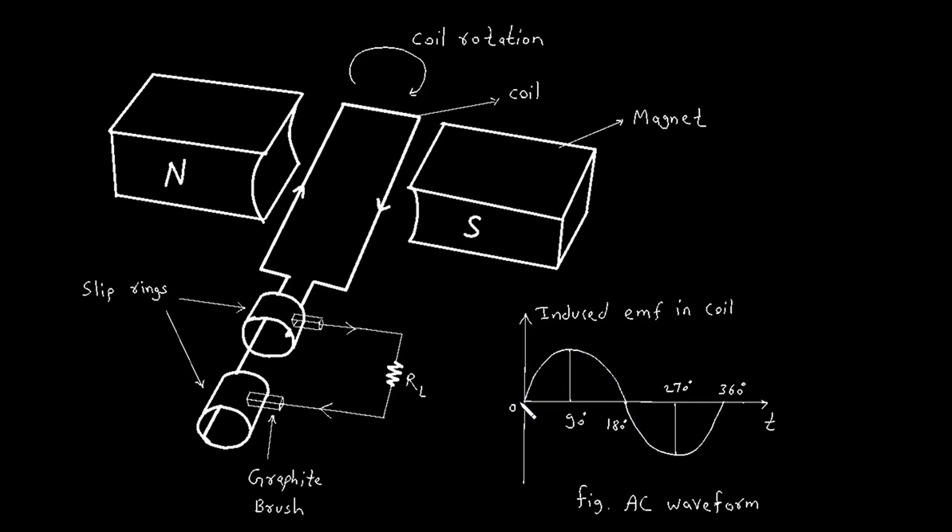At zero degrees, when the coil is parallel to the magnetic field, the induced EMF is zero. As the coil rotates to 90 degrees, it cuts through the magnetic field lines most effectively, and the induced EMF reaches its maximum positive value. At 180 degrees, the coil is again parallel to the magnetic field, and the EMF drops to zero.